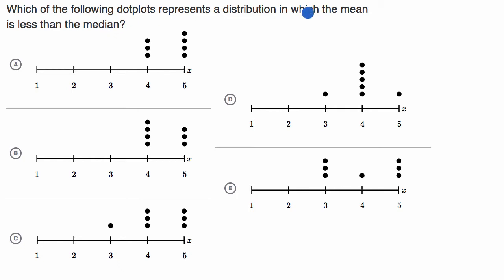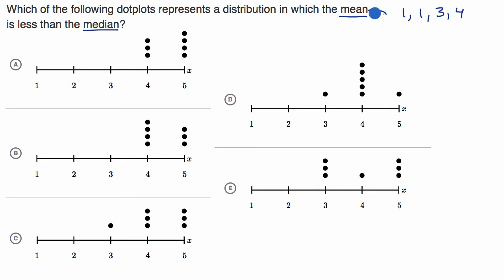Let's remind ourselves what the mean and the median are. The mean is what you normally associate in everyday language with the average. So if I have four numbers — one, one, three, and four — to calculate the mean, I add them all up: one plus one plus three plus four, and then divide by the number of numbers there are. A lot of people would consider this the average.